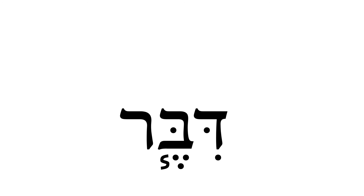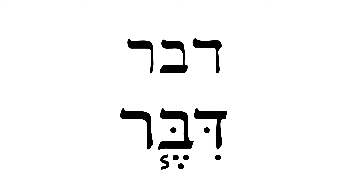Diber — the Lord spoke. Clearly, this is coming from devar. And you have some great indicators here that you're looking at a Piel. This is a very clear case for a Piel. It's a strong verb, so it's an easy one to identify the root letters. You have the hiriq under the first consonant — that's pretty common when you're looking at a perfect. And then you also have the dagesh forte in that second root letter. Those are your two main indicators that you're looking at a Piel verb here.